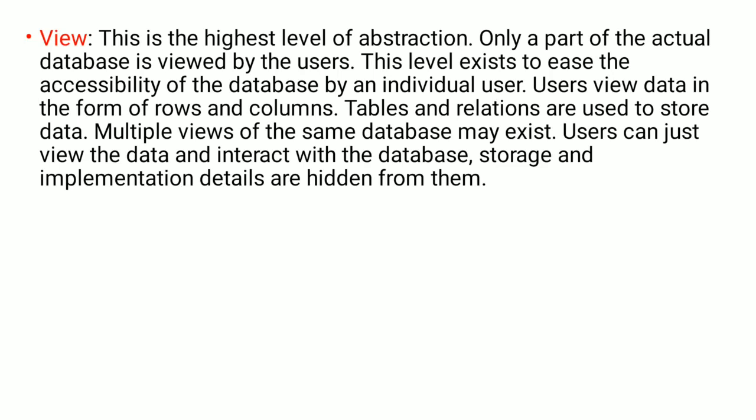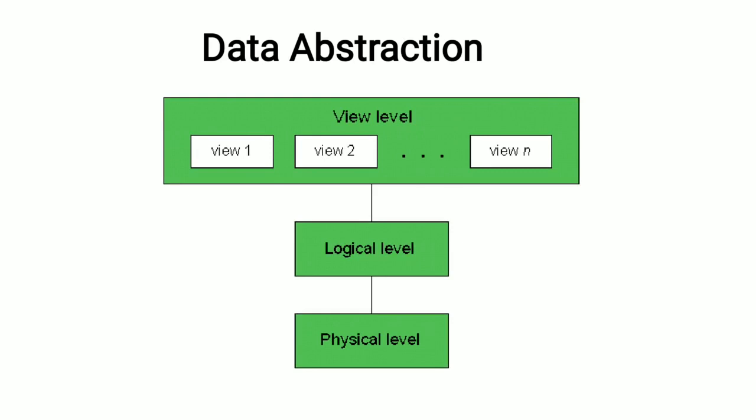Many database systems hide the lowest-level storage details from the database programmer. At the logical level, the type definition of the record is decided. The programmer and the database administrator work at this level of abstraction. At the view level, a specific view of the record is allowed. For instance, a customer can view the name or ID of the employee but cannot access the employee's salary.